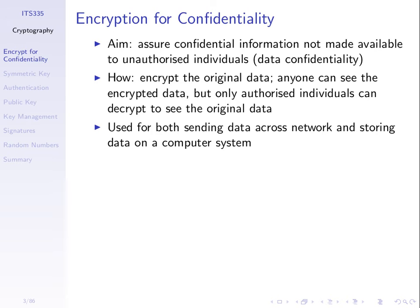The way that we achieve confidentiality is we take that confidential information, encrypt it using an encryption algorithm, such that anyone can see the encrypted data. We don't care who sees the encrypted data, but the algorithm should be such that only authorised people can decrypt to find the original data. The authorised people will be identified with the use of keys, secret keys for example.